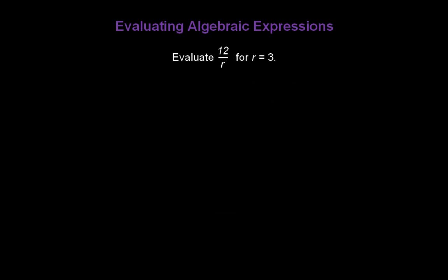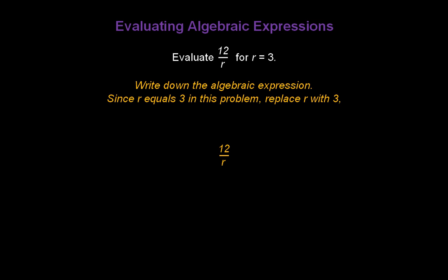Here's another one. Let's evaluate 12 divided by r for r equal to 3. First, write down the algebraic expression: 12 divided by r. Since r equals 3 in this problem, we're going to replace r with 3, giving us 12 divided by 3. All we have to do is solve that expression — 12 divided by 3 is 4.